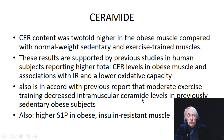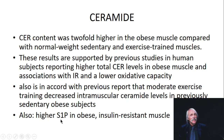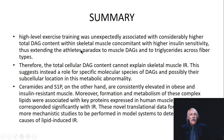Higher sphingosine-1-phosphate was found in obesity and insulin resistance. Sphingosine-1-phosphate is thought to work opposite to ceramide — but that's in the cancer literature, not in the metabolic obesity literature. You have to be very careful about which context you're looking at. Summary: high-level exercise training unexpectedly associated with higher DAG, so total cellular DAG can't explain insulin sensitivity — it suggests a role for specific molecular species. Ceramides look like the bad players.